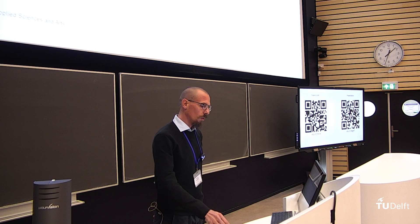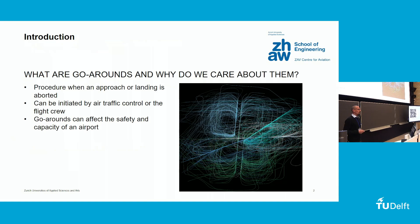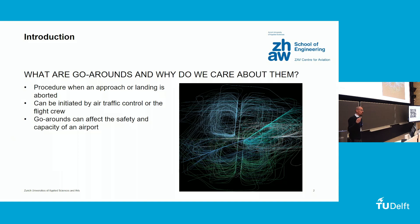As Xavier mentioned, I'll introduce a dataset that we just published on go-arounds. Why do we care about go-arounds? One is they make for very nice visualizations. A go-around is a procedure that is initiated when a safe landing or approach cannot be continued, and the aircraft has basically to try again. They can either be initiated by the aircrew or by air traffic control. There is quite a bit of research going on in that field because they have an effect on safety and also on traffic flow and the capacity of an airport, because they basically disrupt the traffic flow.